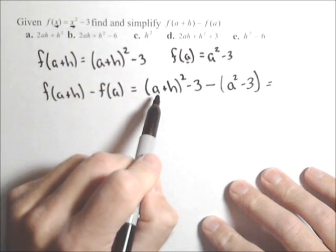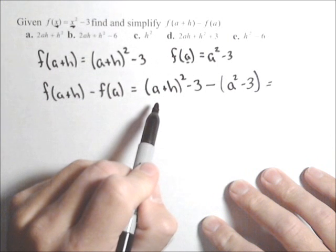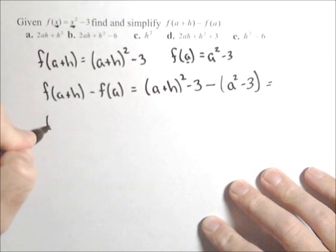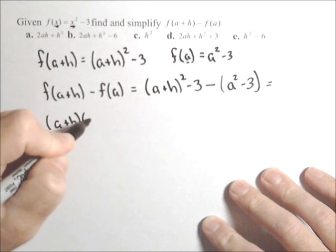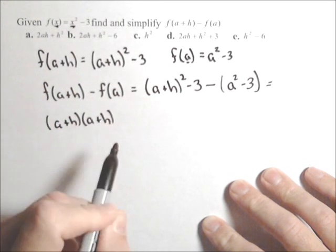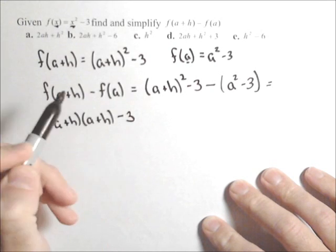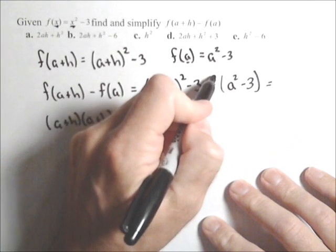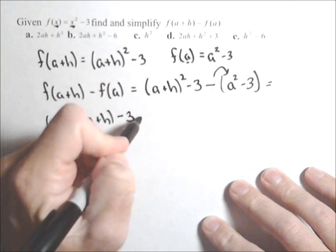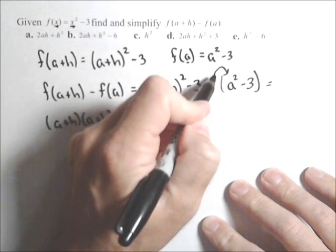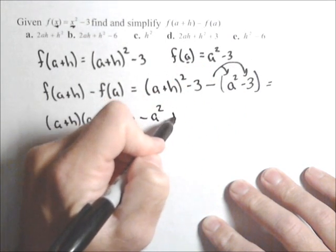Now let's talk about this part. (a+h)² is not a² + h². That has to be FOILed out: (a+h) times (a+h), minus 3. Then we distribute the negative, so we have -a² + 3.